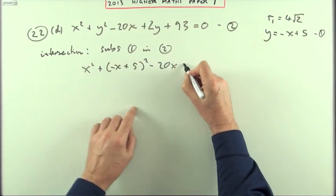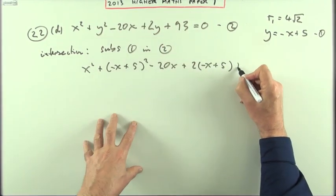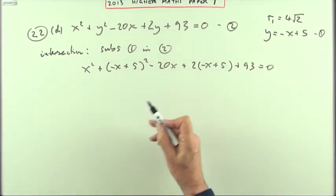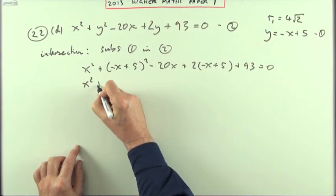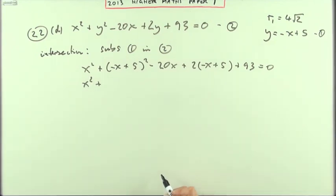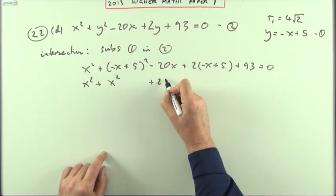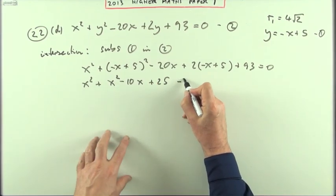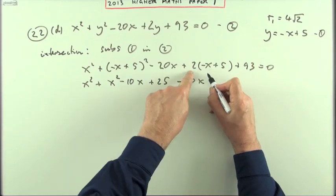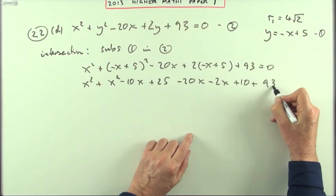There's a y, negative x plus 5, minus 20x, plus 2 times, there's a y, negative x plus 5, plus 93 equals 0, now just carefully multiply that out, because there's all these signs and numbers, I've got x squared plus, here we go again, square a bracket, square the first, this time it'll be plus x squared, square the last, plus 25, now the product is negative 5x, so the doubling of that will be negative 10x, minus 20x, minus 2x, but plus 10, plus 93 equals 0.